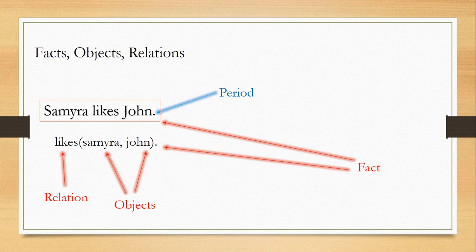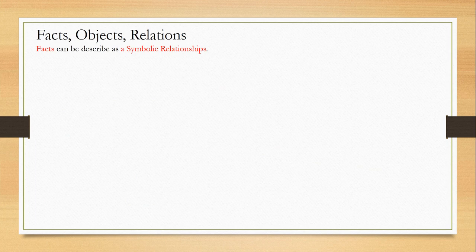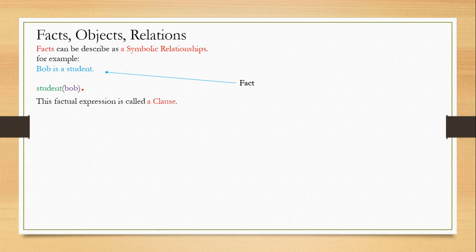Now I'll explain this in definition form. Facts can be described as a symbolic relationship. I'm taking another example: Bob is a student. Here, student is a relation with Bob. Bob becomes my object and student is the relation. These both statements are going to be facts, and these factual statements can be called a clause. This factual expression is called a clause.